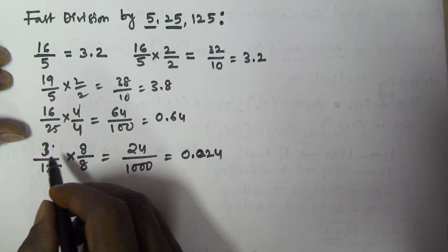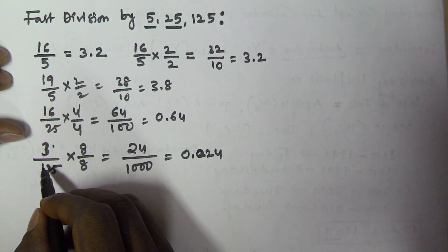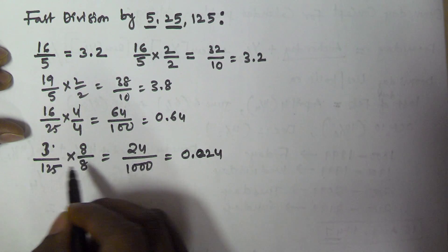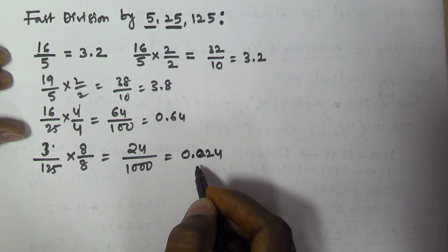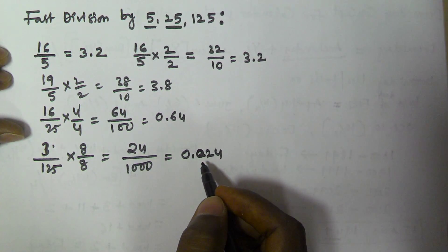If you are trying to divide 3 by 125 normally, it takes time. But if you multiply numerator and denominator by 8, we get the answer in a second.